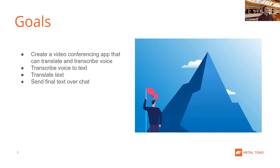We're creating a video conferencing app that can translate and transcribe voice in real time. Say you have two or three people in a conference who speak the same language, but one person does not, or they're hearing-limited. The goal is for one or more users to be able to click a transcribe or translate button, or both, and then be able to see the text.